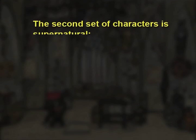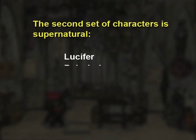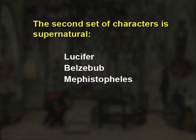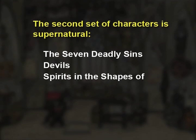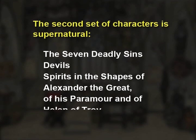The second set of characters is supernatural. This includes Lucifer the prince of devils, Beelzebub, Mephistopheles, the good angel, the evil angel, the seven deadly sins, devils and spirits in the shapes of Alexander the Great, his paramour, and of Helen of Troy.